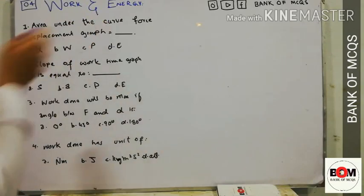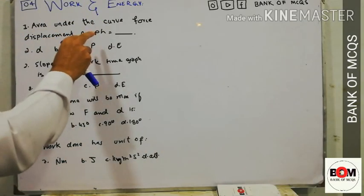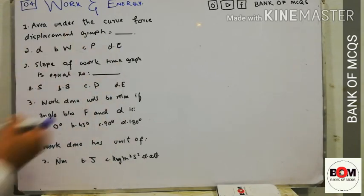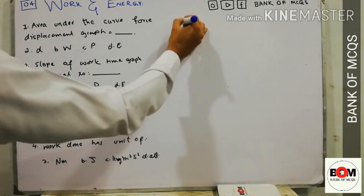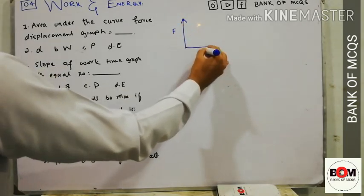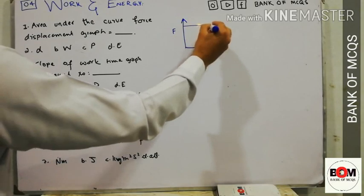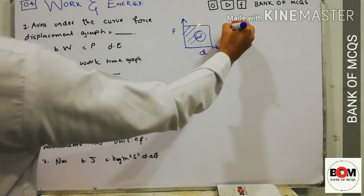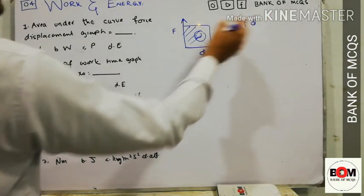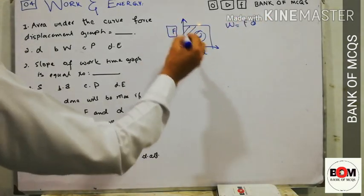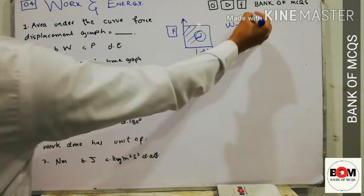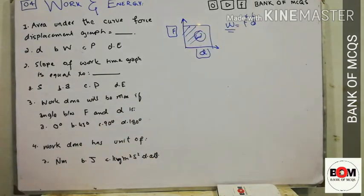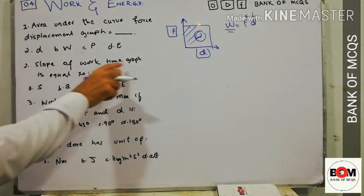The first MCQ: the area under the force-displacement graph is equal to work. If we have force on the y-axis and displacement on the x-axis, then the area under the force-displacement graph equals W. This is because W equals F×d, so the product of F and d gives us work.